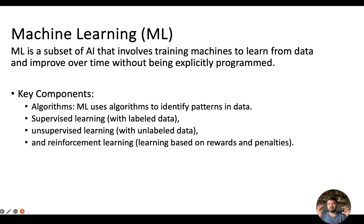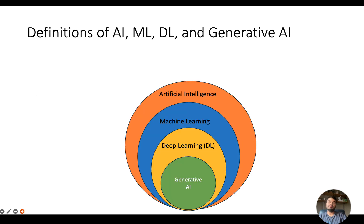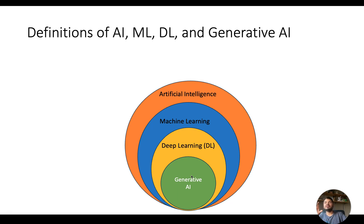Before moving on, keep this picture in mind for your exam: where artificial intelligence sits at the top, then machine learning beneath it, then deep learning, and finally generative AI at the innermost level. Artificial intelligence is technically an abstraction of everything which we do — you are providing artificial intelligence to a machine, and that's what AI is all about.